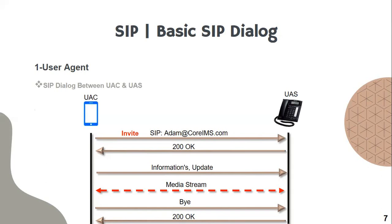So the SIP dialogue is when the user agent client decides to do a call or initiate a voice call. He will send a SIP request, and the type of that SIP request is INVITE — an INVITE SIP message. We will understand all of the SIP messages in detail later, but here we are talking on a high level about how the SIP dialogue looks, using an INVITE message as an example.